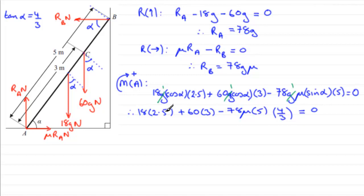Now if we work out 18 times 2.5 plus 60 times 3, we end up with 225. So therefore 225. And then if we work this part out, 78 times 5 times 4 thirds, you get 520. So we've got minus 520 mu. And that equals 0. So if we rearrange this for mu, we've got 225 equals 520 mu. Divide both sides by 520. So mu equals 225 divided by 520. And this comes to 0.4326 and so on. And if we round this, say, to two decimal places, it's 0.43 to two decimal places.